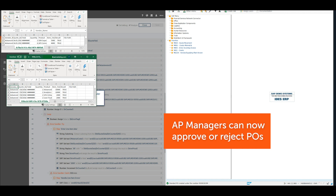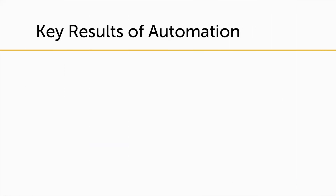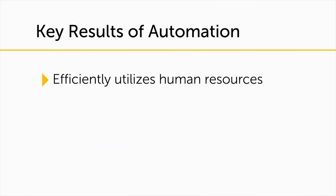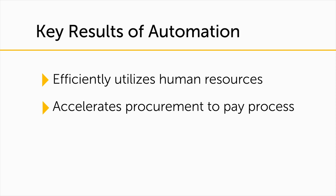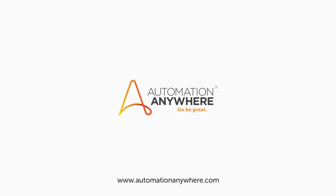Automating everyday business processes like purchase order entry and creation greatly increases the efficiency of human resources and accelerates the procurement process, saving time and money with drastically reduced human errors.